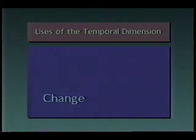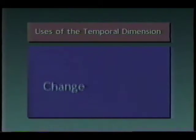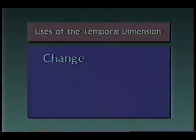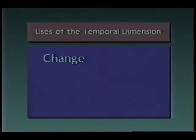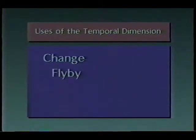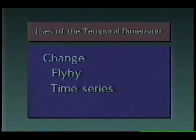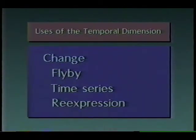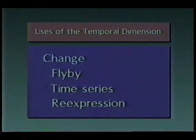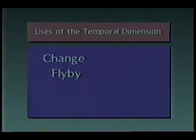Animation is clearly effective in enhancing displays of static information. But the greatest potential of the medium for cartographers is to represent phenomena that change through time and space. Now we consider three strategies for exploiting the temporal dimension in displays of dynamic information: flybys, time series, and re-expression.